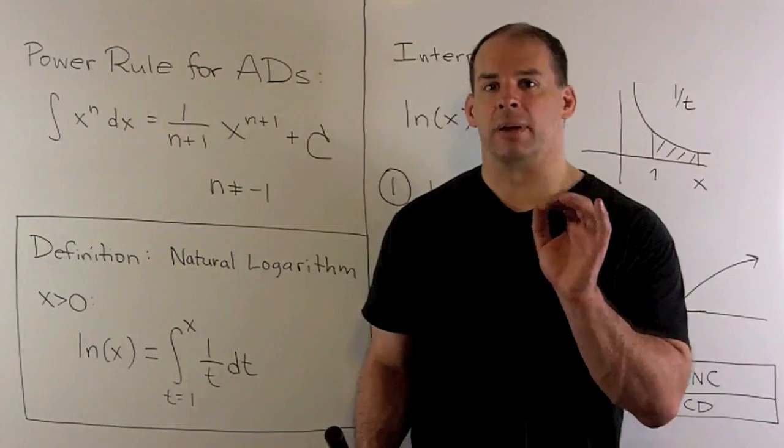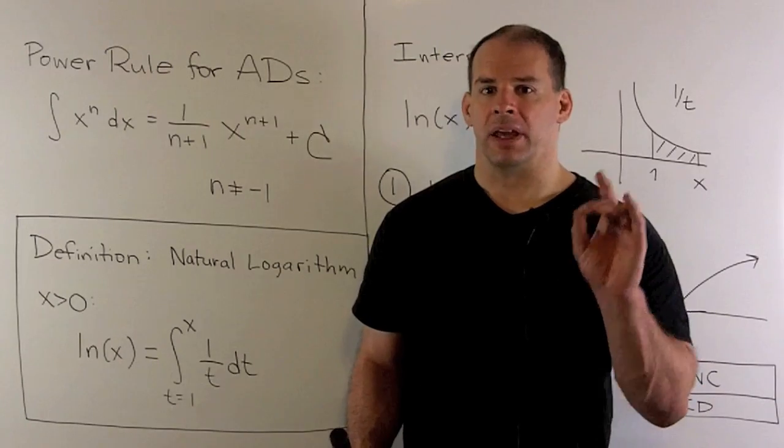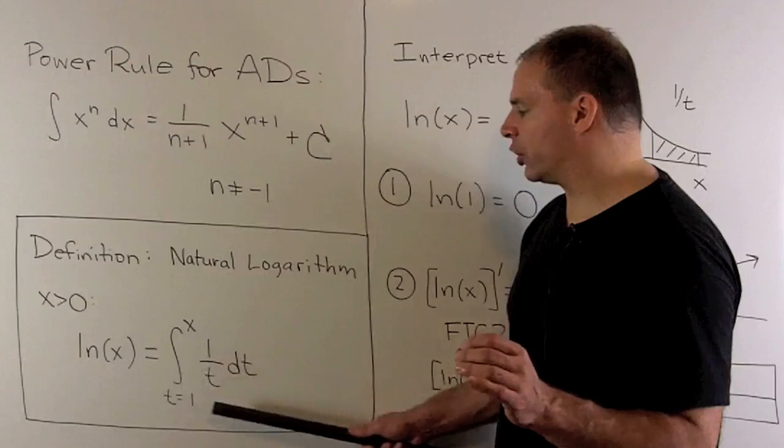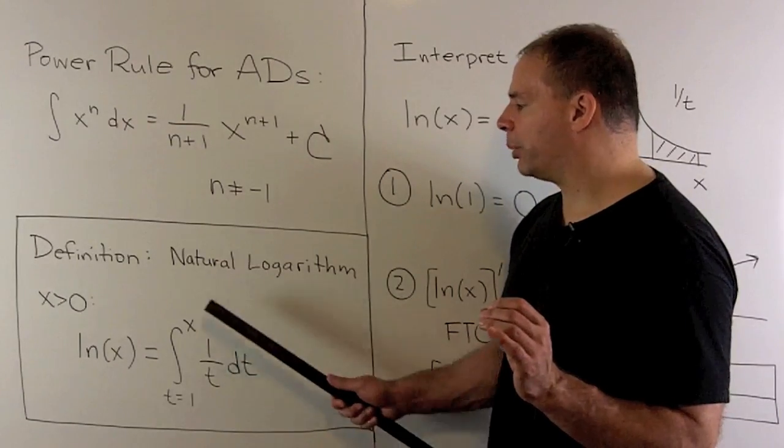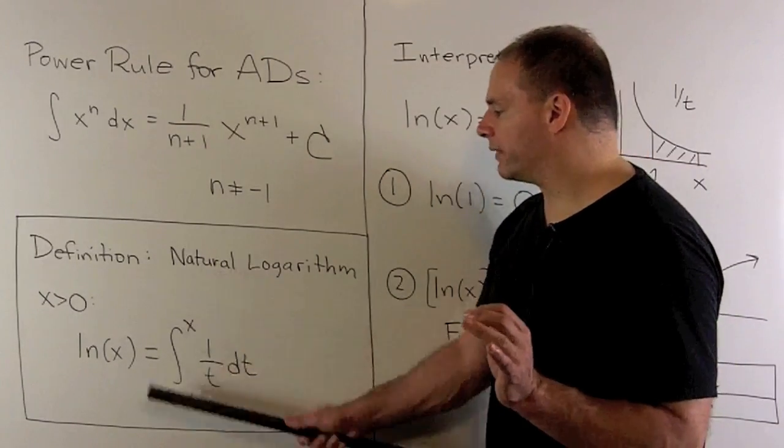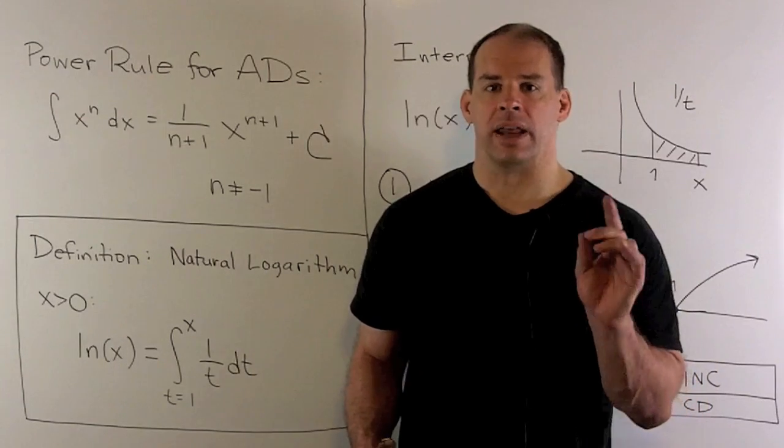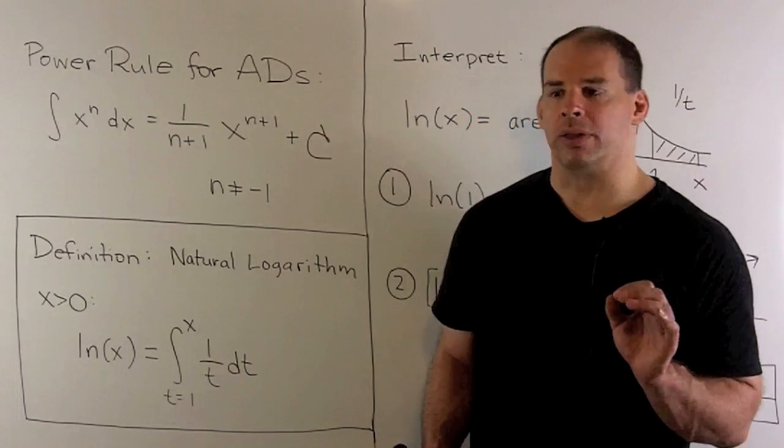Second fundamental theorem of calculus says, if I take the derivative of this function with respect to x, we just take the integrand, and wherever I have a t, I put an x. So, the derivative of this function is 1 over x. Now, the name we give this, natural logarithm.